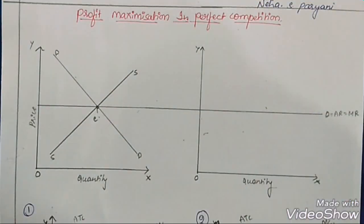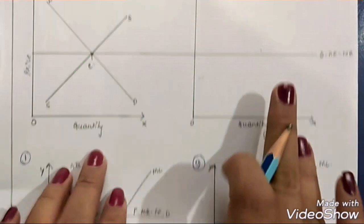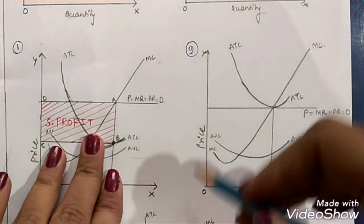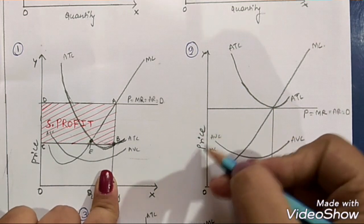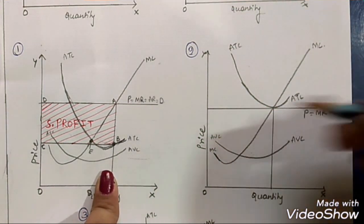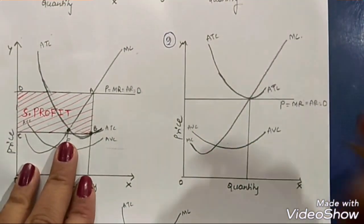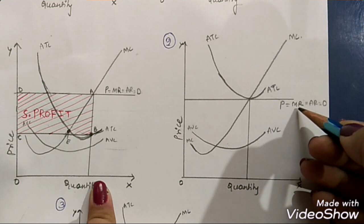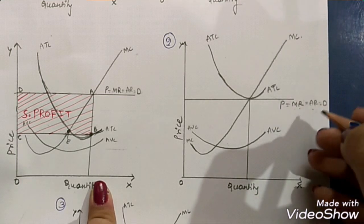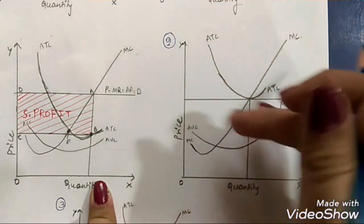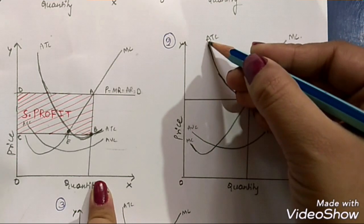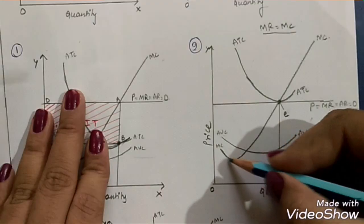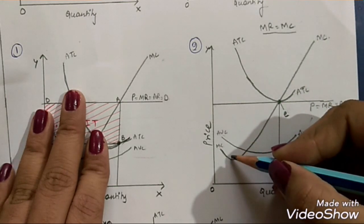Now let's discuss what happens if a firm wants to increase profits. Let's look at the diagram. On the OX axis we have quantity and on the OY axis we have price. The price here is a horizontal straight line because it will not change — the same price will be prevailing. In this market situation, price is also known as marginal revenue (MR), average revenue (AR), and the demand curve — they are all the same single horizontal line. We also have the average total cost curve, average variable cost curve, and the MC curve, which initially reduces but later increases.